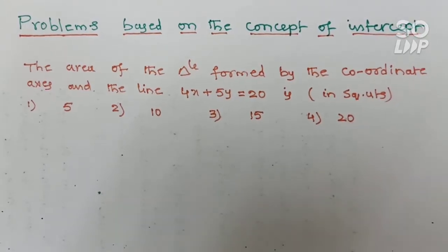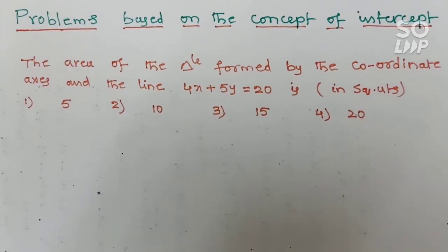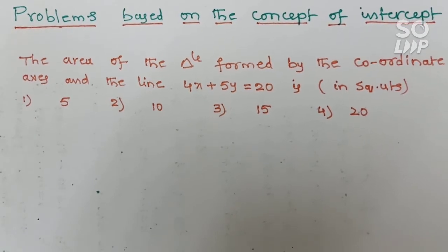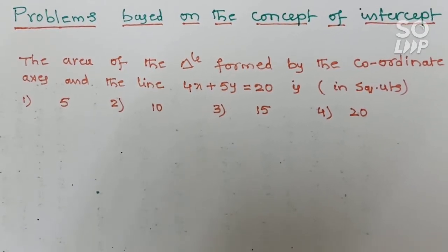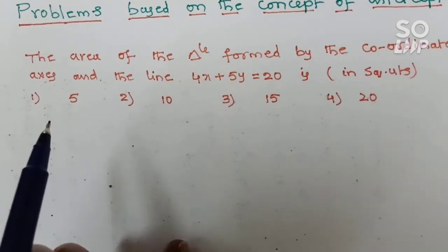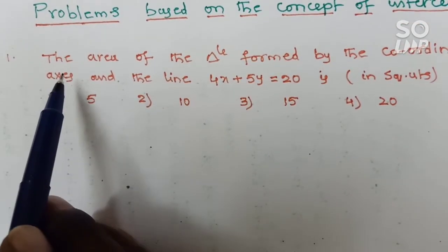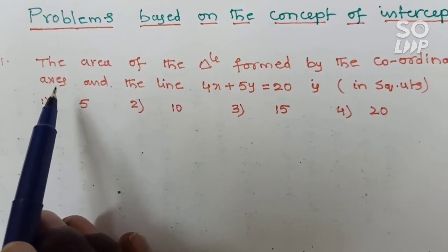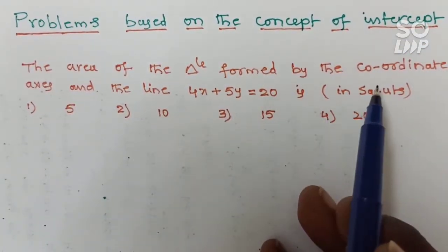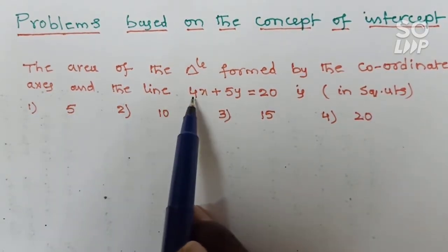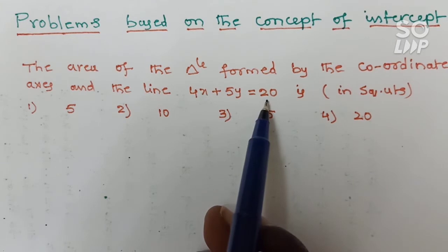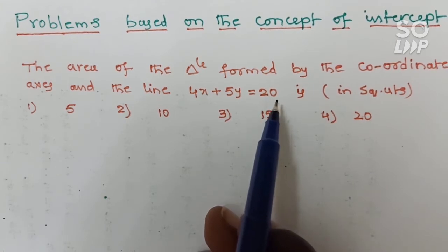In this video, we are going to discuss problems based on the concept of intercept. In this problem, the area of triangle formed by the coordinate axis and the line 4x plus 5y is equal to 20.